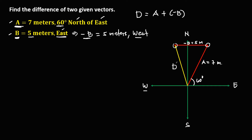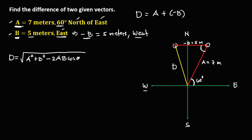So this is now the resultant vector, or the difference of these two vectors. To find the difference, we use the cosine law: D equals the square root of A squared plus B squared minus 2 times A times B times cosine theta. To find angle theta, using the transversal angle, this angle equals 60 degrees, so we use 60 degrees as our angle theta.